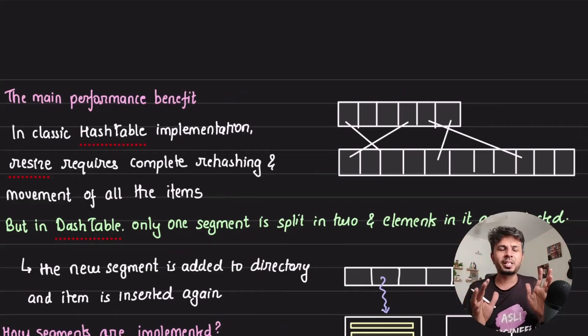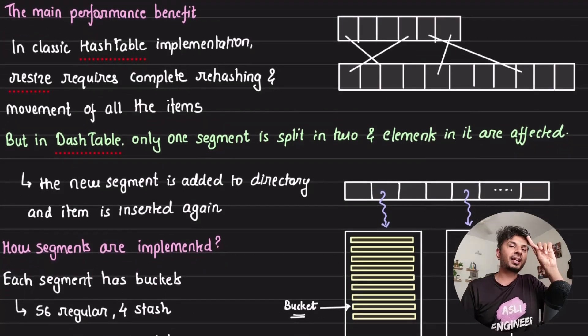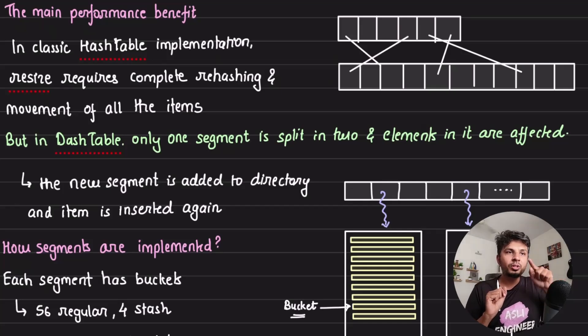The core idea is that in a classic hash table implementation, whenever I'm resizing my hash table, I would have to rehash all the elements. In worst case, I would require to move all the elements across the new hash table.